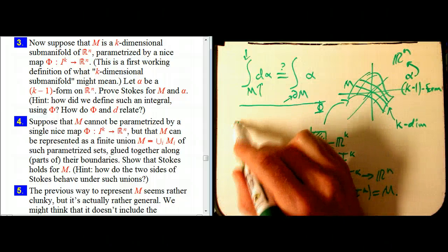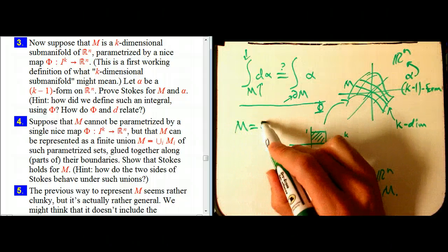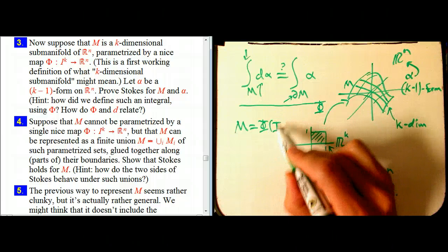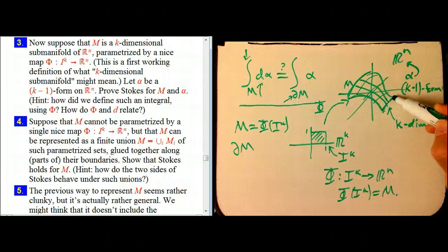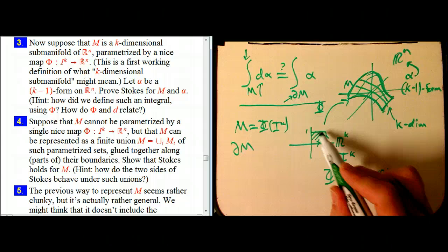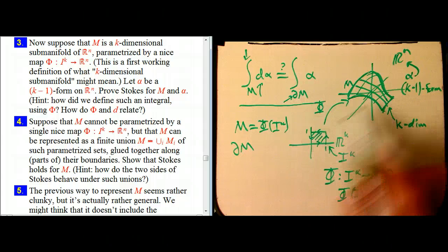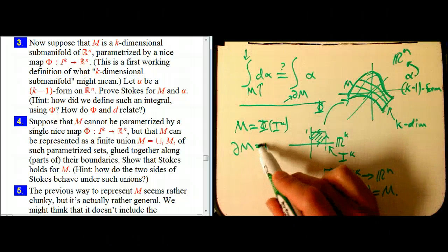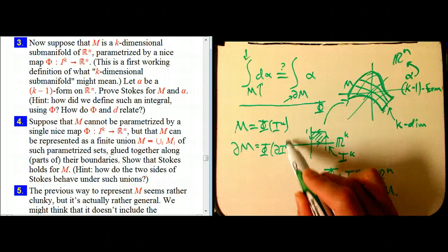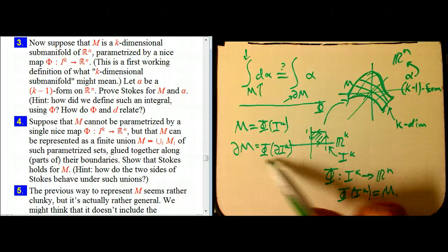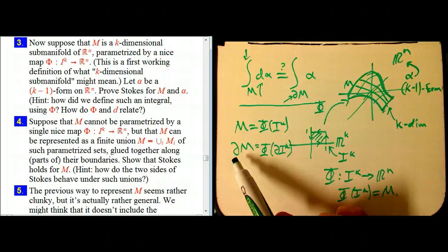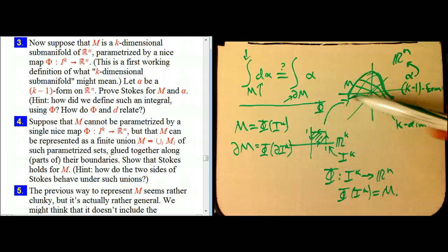Well, the boundary, if M is phi of Ik, then the boundary of M, that's this boundary stuff here, it's pretty plausible that that's just exactly the boundary, that that's phi, the image under phi of the boundary of Ik. And, in fact, if you're worried, is that rigorous or not?